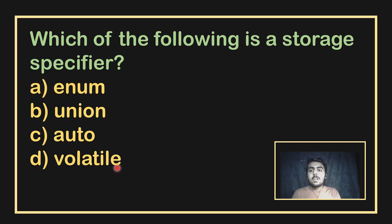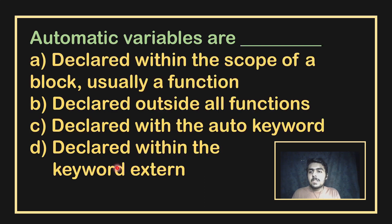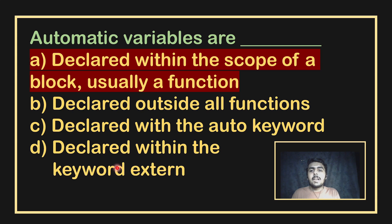Which of the following is a storage specifier? A storage specifier specifies how a variable is stored. The answer is auto. An automatic variable is declared within the scope of a block, usually in a function.